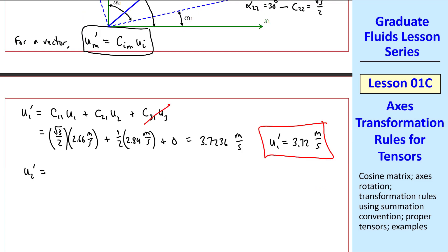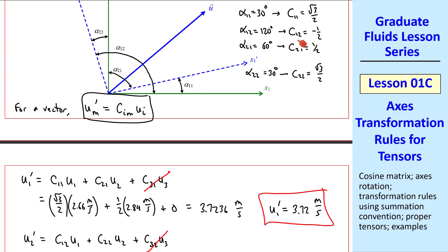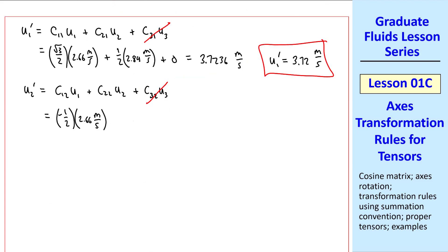Similarly, u'2 is c12 u1 plus c22 u2 plus c32 u3. Again, this last term is 0. I plug in c12 from up here times u1 plus c22 times u2. I get 1.1295, or to three digits, 1.13 meters per second.